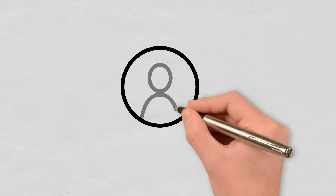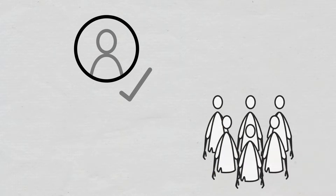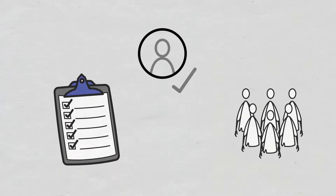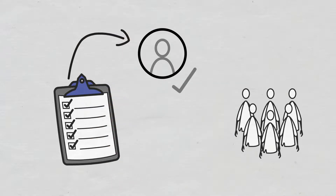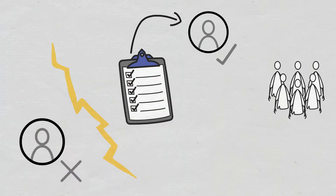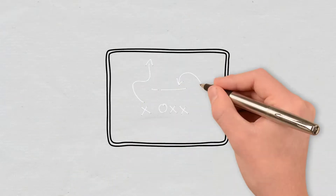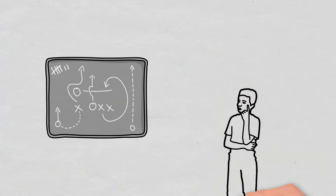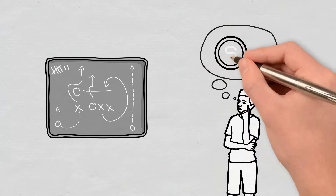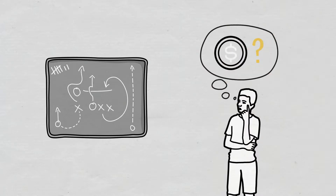Can it be used in a decentralized manner? The Proof of Authority mechanism works best in a centralized way, due to reasons such as having a small number of validators. This means that many believe Proof of Authority to be a consensus mechanism that aims to make centralized systems better and more efficient, not decentralized ones.